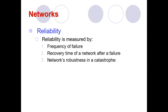The third reliability factor is the network's robustness in a catastrophe — how strong it is under extreme conditions like lightning, high electrical power surges, or heavy wind during rainy seasons. Based on frequency of failure, recovery time, and robustness, we can set up a reliable network that we can depend on.